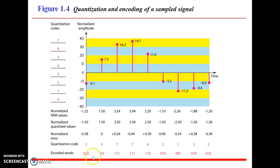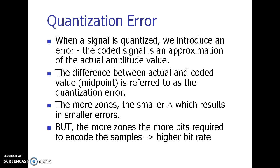Quantization error is introduced when we round off a signal, changing its actual amplitude value slightly. The difference between the actual sample value and the coded midpoint value is referred to as quantization error. When you take more zones, delta will be smaller and quantization error will be smaller. However, L increases, requiring more bits for encoding, resulting in a higher data rate. So we must balance: neither too few nor too many levels, depending on the required data rate and bandwidth.